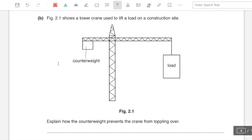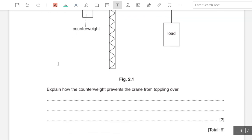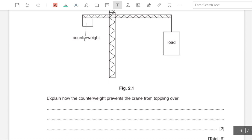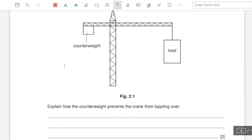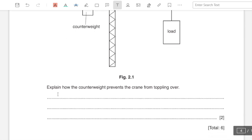Part b: figure 2.1 shows a tower crane used to lift a load on a construction site. Explain how the counterweight prevents the crane from toppling over. The counterweight is acting as the anti-clockwise moment and that is the reason it does not topple towards the right because of the weight of the load.